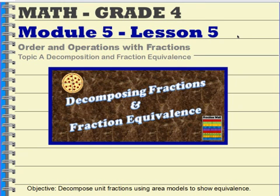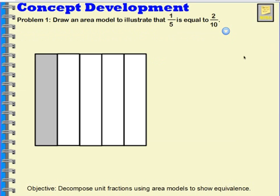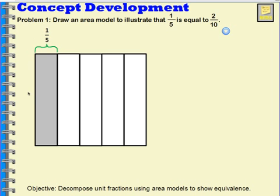Let's review math grade 4, module 5, lesson 5: order and operations with fractions, topic A — decomposition and fraction equivalence. In this problem we have an area model that shows five parts, one through five, and one of those parts is shaded. I can represent that with this area model and mark off that this right here is my one-fifth piece.